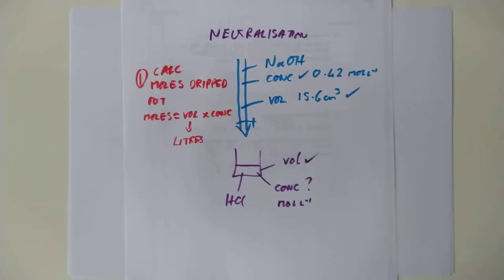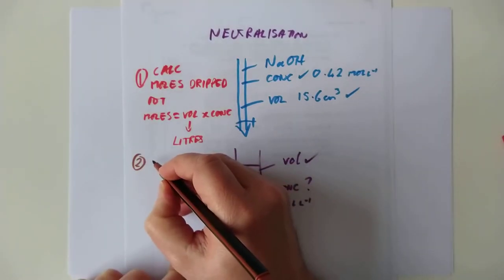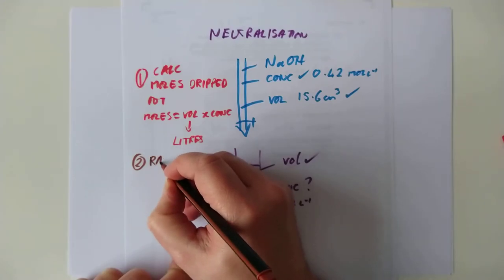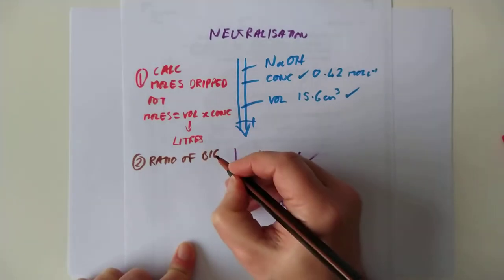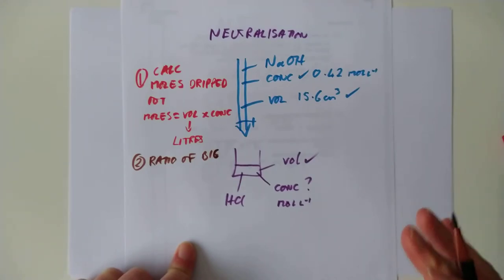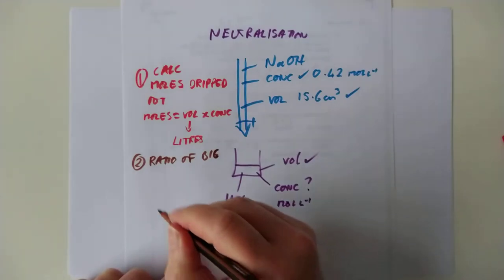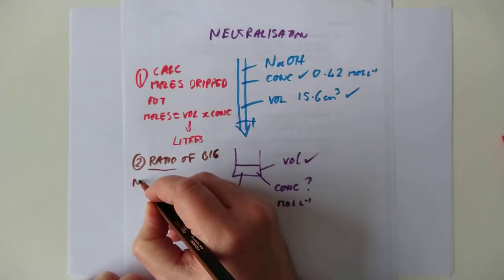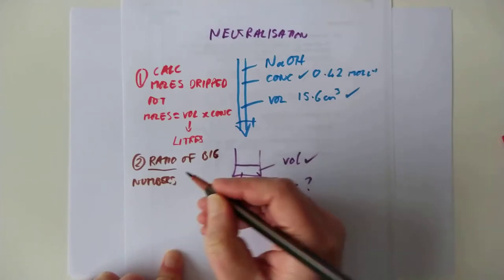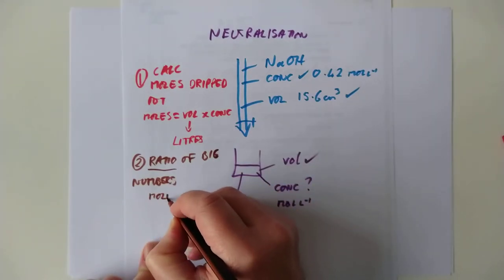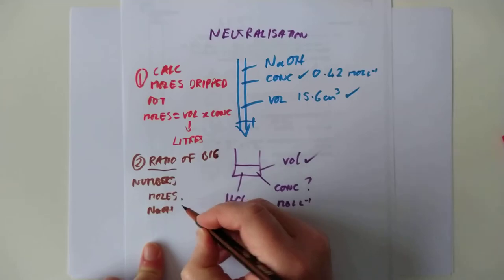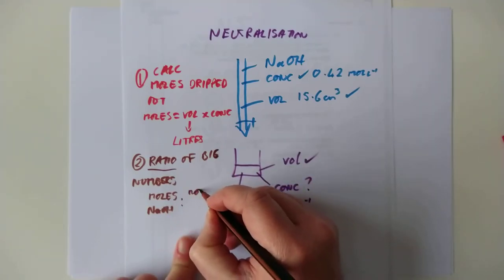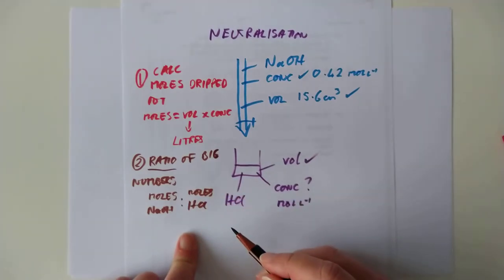So, how do we go about these calculations? I split my titration calculations up into three stages. Stage number one is all to do with the burette. And stage number one is, I tell you to calculate the moles that you dripped out of your burette. How do we do that? Well, these are all solutions. There's no mass involved here. So, it's the second triangle from the previous video. So, it's moles equals volume times concentration. That's easy. That's ever so slightly tricky, because it's got to be in litres. That's stage one. And that will give you a number of moles. In this case, moles of sodium hydroxide.